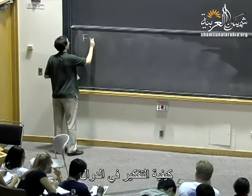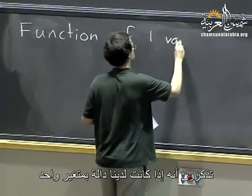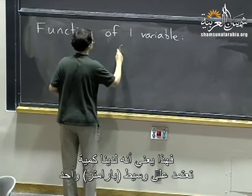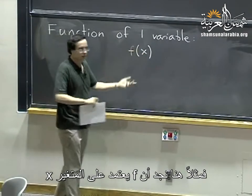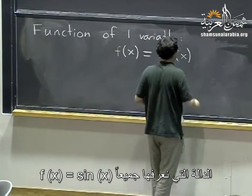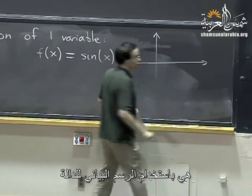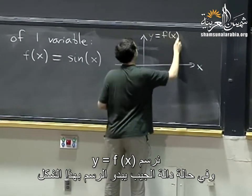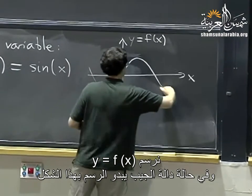First of all, we should try to figure out how we are going to think about functions. If you have a function of one variable, that means you have a quantity that depends on one parameter — maybe f depends on the variable x. For example, the function you all know is f of x equals sine x. The way we would represent that is by plotting the graph of a function: we plot y equals f of x, and in the case of a sine function, that looks like this.